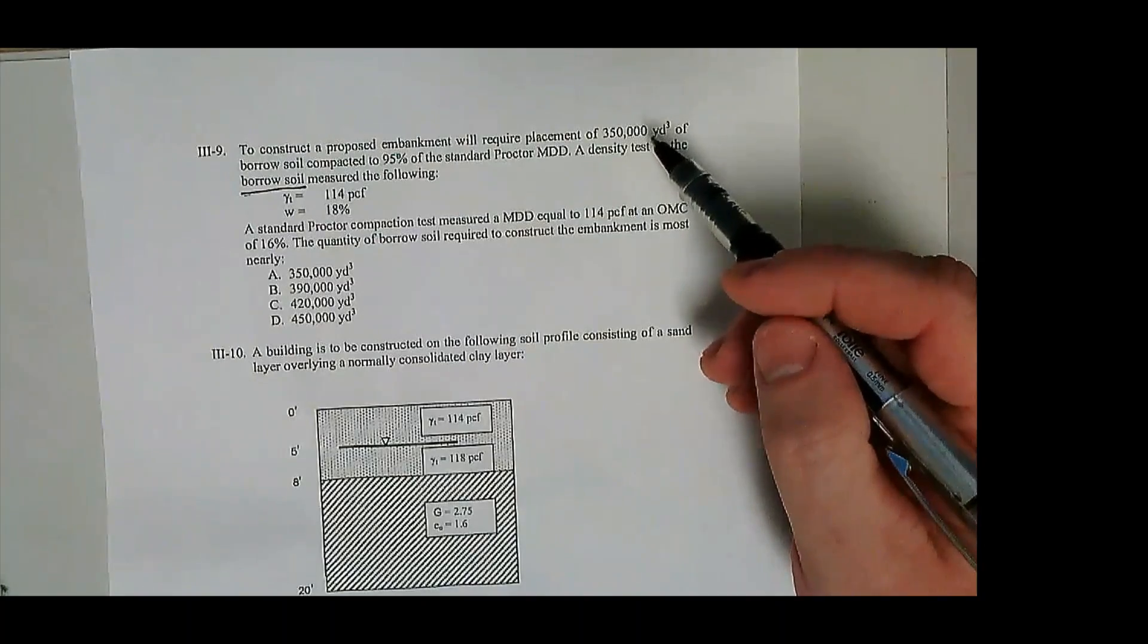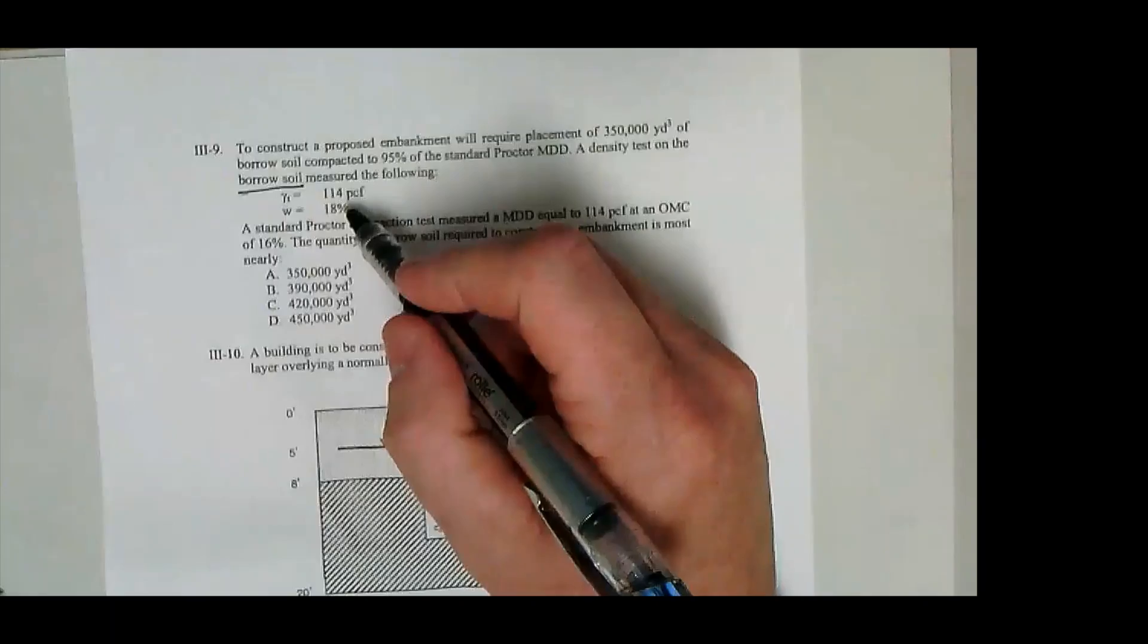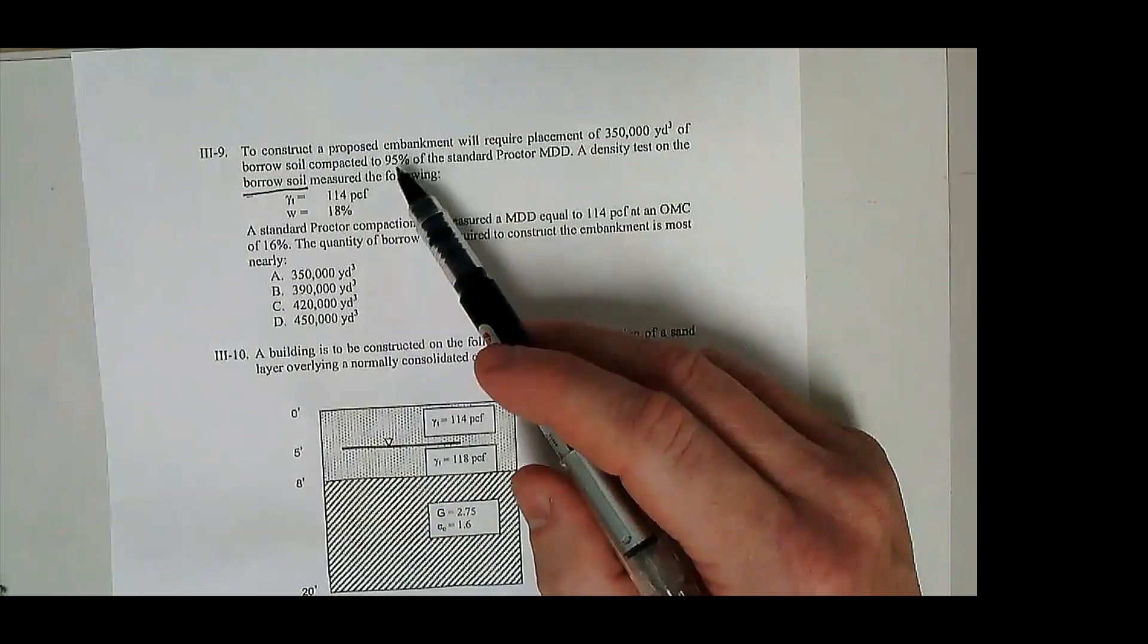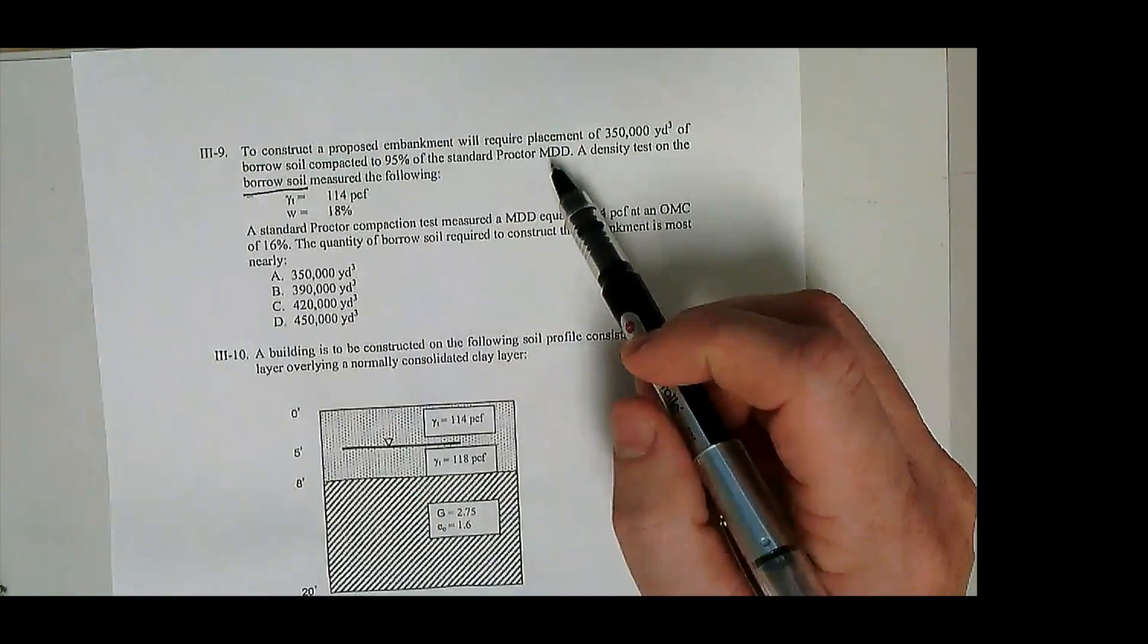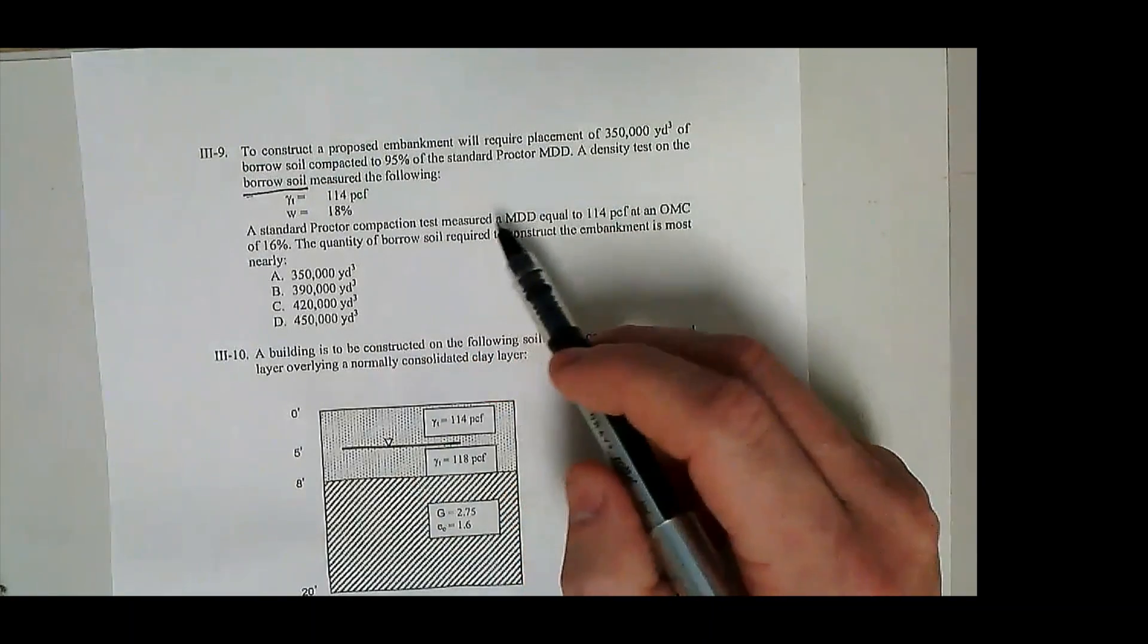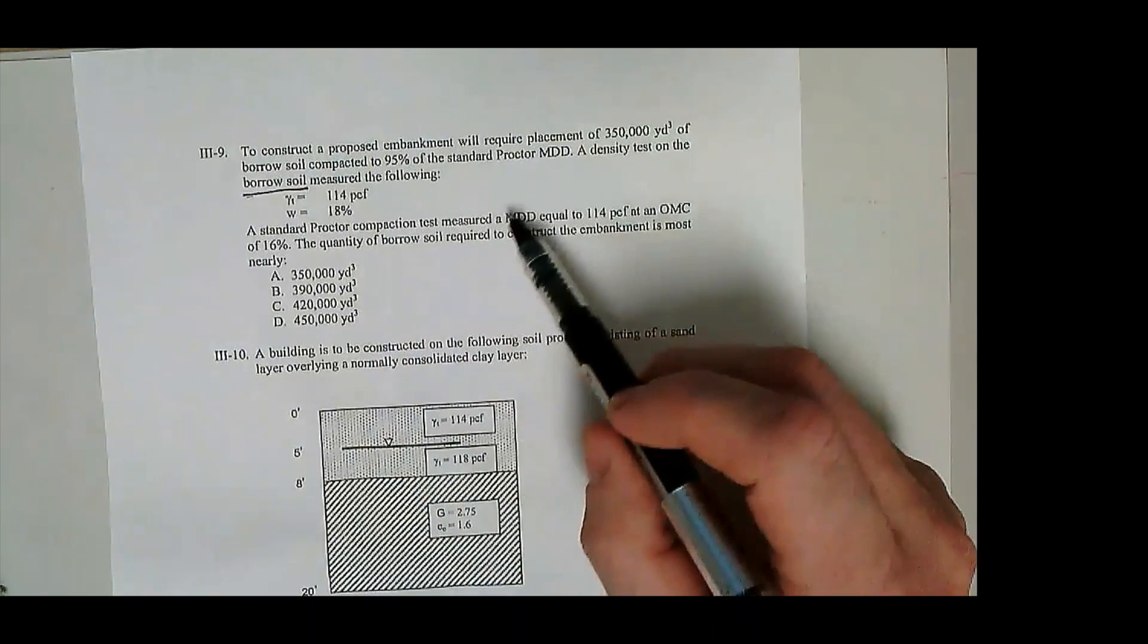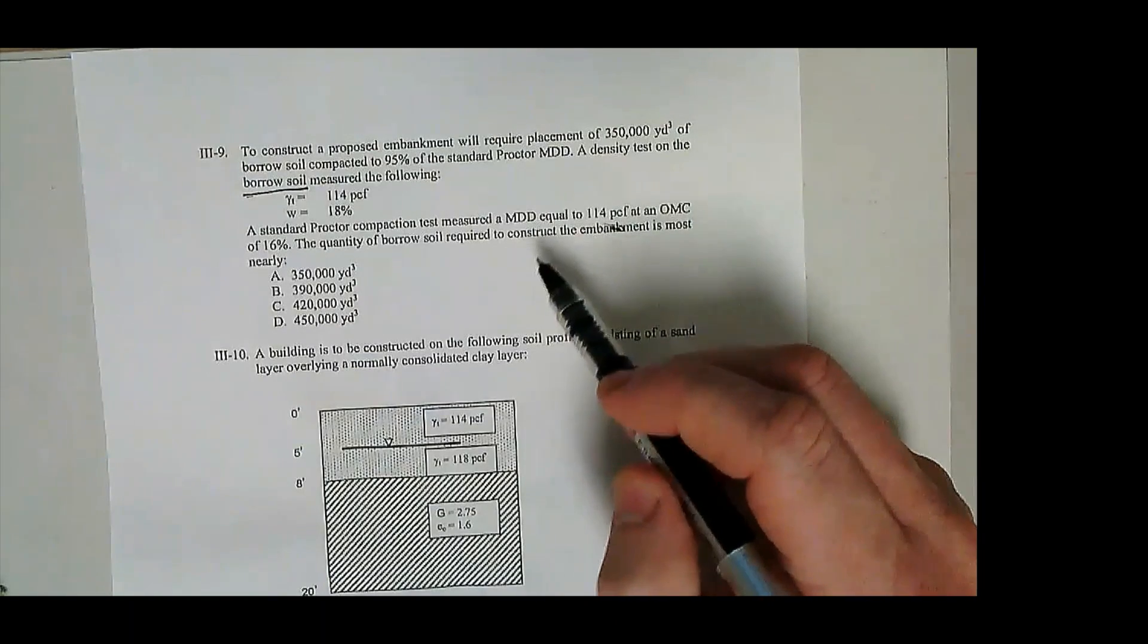So you actually measured a total unit weight in the borrow pit. You sent the field technician over there, they ran a field density test and got 114 pounds per cubic foot and 18% water content. But you need to compact that soil to 95% of the standard proctor max dry density according to the construction specs for that project, which is a pretty typical value. You have a standard proctor that gives you a maximum dry density of 114 PCF and an optimal moisture of 16%. Now you're going to compact that soil to 95% of 114 PCF. So that'll allow you to calculate the in-place compacted dry density of that soil.